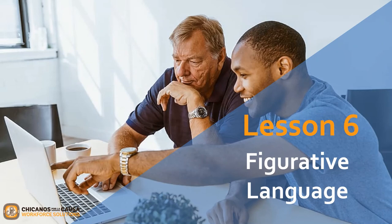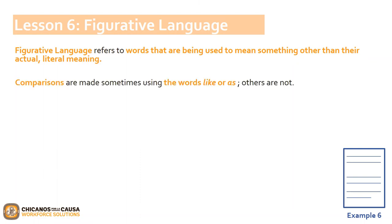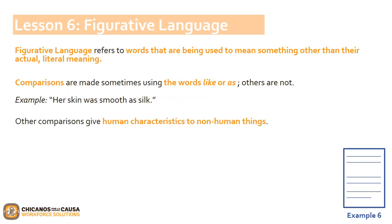Let's move on now to Lesson 6, Figurative Language. Figurative language refers to words that are being used to mean something other than their actual literal meaning. Writers and poets use this type of language to help paint a mental picture in the reader's mind. In figurative language, comparisons are made sometimes using the words 'like' or 'as.' Others are not. An example would be: 'Her skin was smooth as silk.' Other comparisons give human characteristics to non-human things. An example would be: 'The moon yawned.'